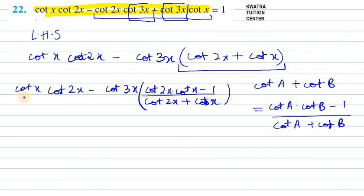Now, cot 3x and cot 2x plus cot x can be cut down because they will be equal to cot 3x.